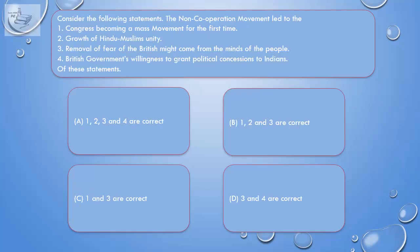Question: Consider the following statements. The non-cooperation movement led to: 1. Congress becoming a mass movement for the first time. 2. Growth of Hindu-Muslim unity. 3. Removal of fear of the British might from the minds of the people. 4. British government's willingness to grant political concessions to Indians.